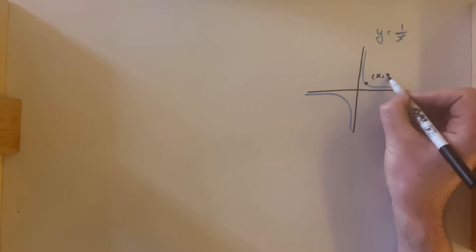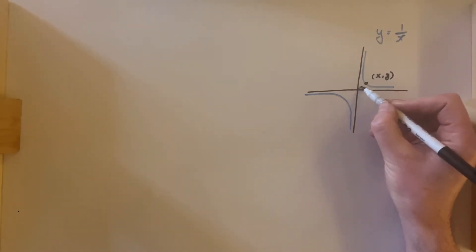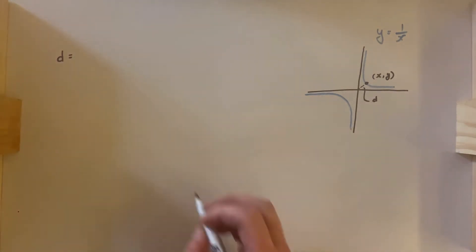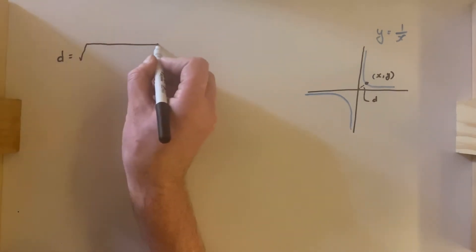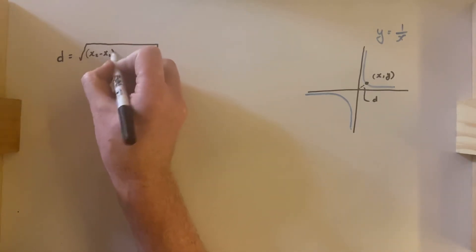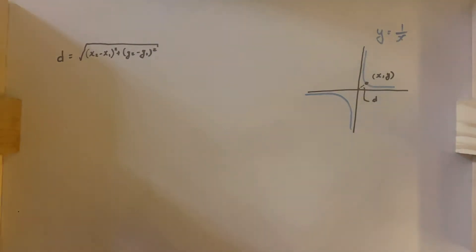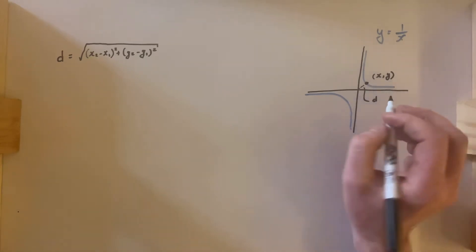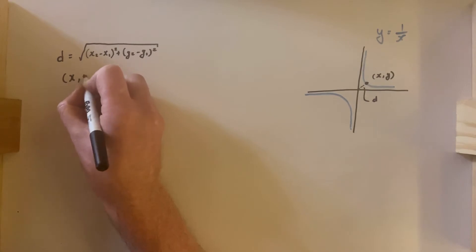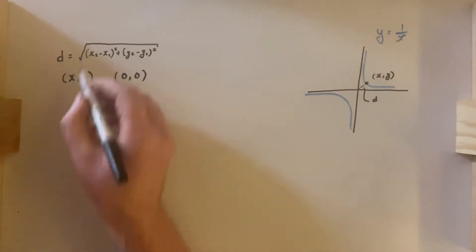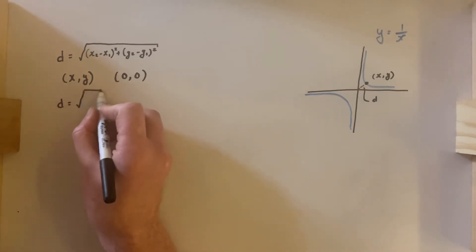We can choose any point on this graph and call it x comma y. What we're asked is to find the distance d from that point x, y to the origin. The distance formula — the distance between two points d — is equal to the square root of (x2 minus x1) squared plus (y2 minus y1) squared.